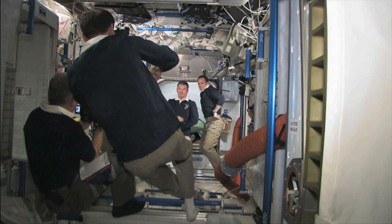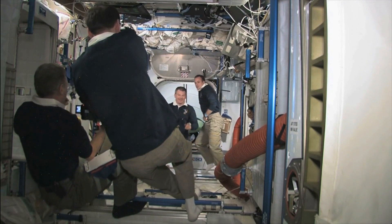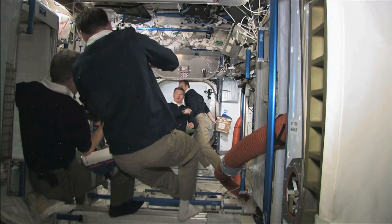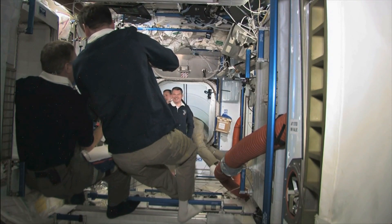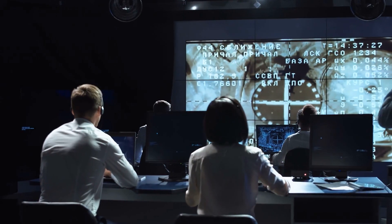However, the focus currently is on finding Proxima b as research suggests that urban worlds are more likely to orbit red dwarf stars at close distances.